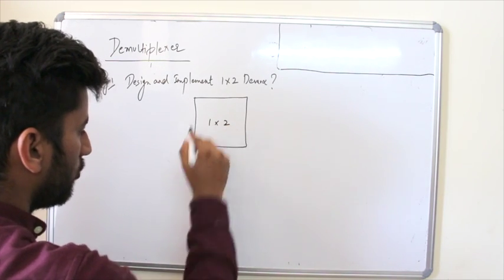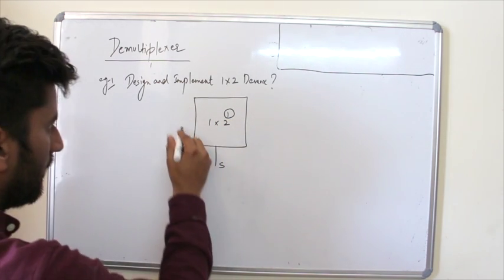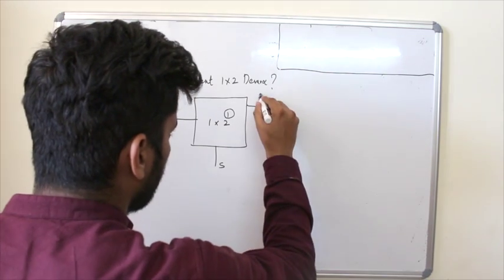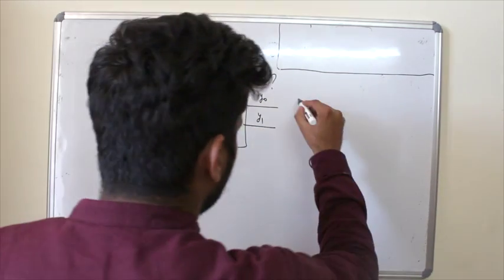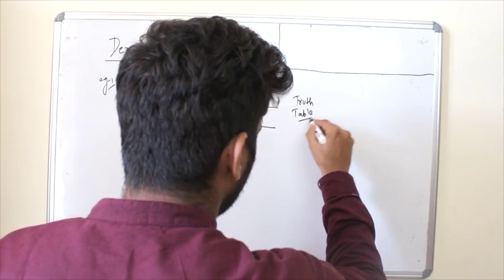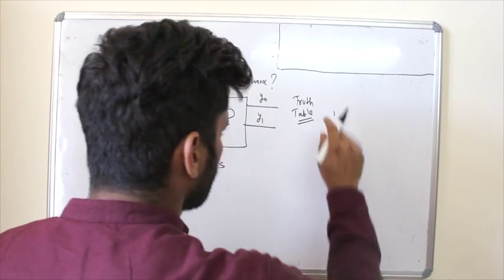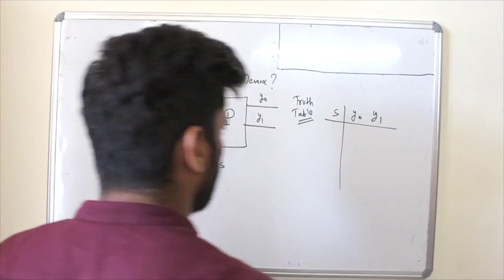First, block diagram. I know this is 1 into 2 where this 1 is basically representing what? Select line. And we have 1 input represented by i and we have 2 outputs y0, y1. Okay, next we have the truth table.